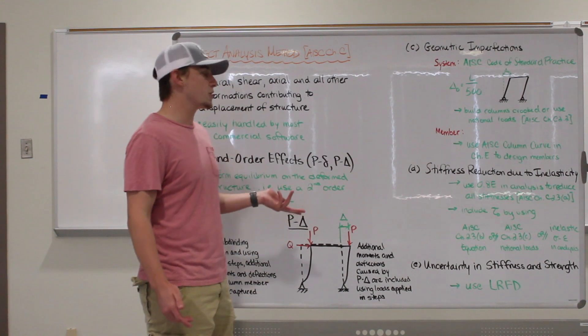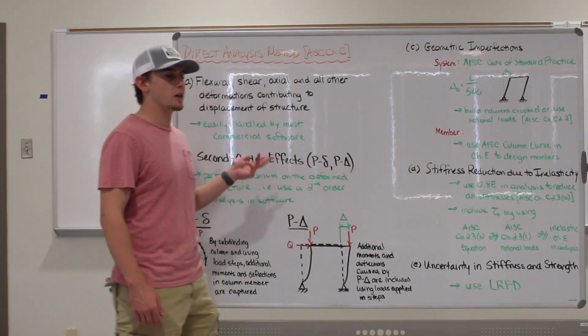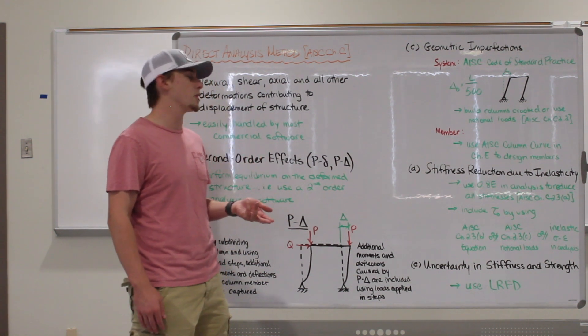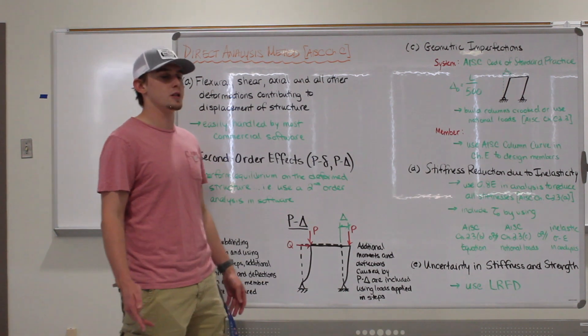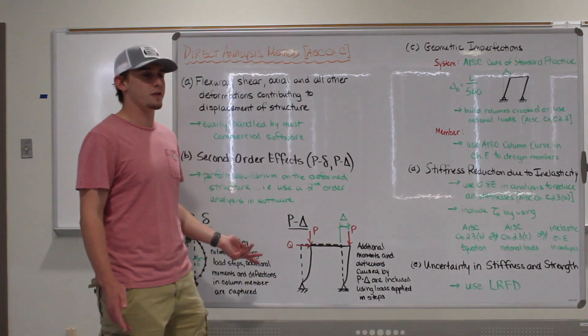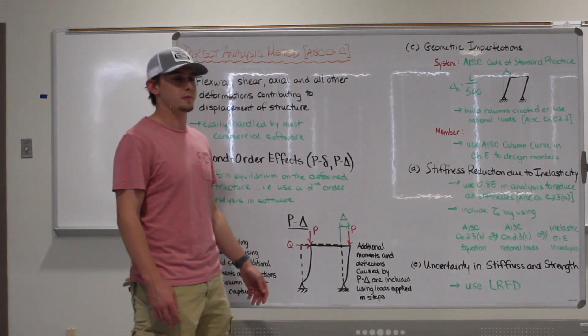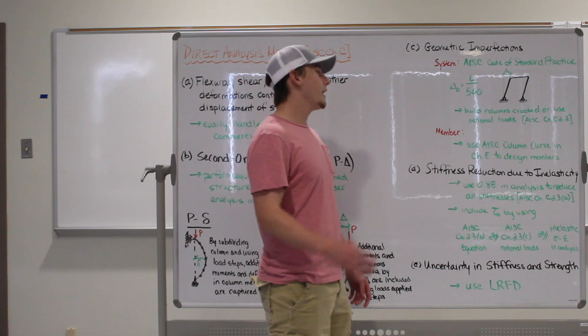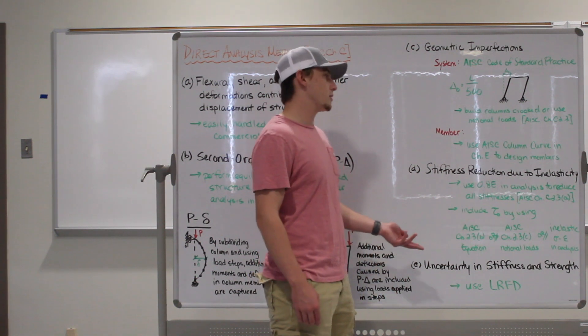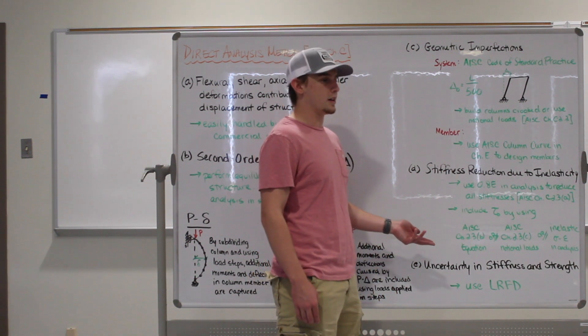Item A is pretty easy — pretty much any commercially available software will calculate the flexural, shear, and axial deformations needed to solve for the displacement in the structure. As long as you don't have a funky or flimsy connection, you should be fine. And item D was handled when we used 0.8 times the modulus of elasticity in the program. Now you're getting it. In addition to point E, we also need to include the tau factor.